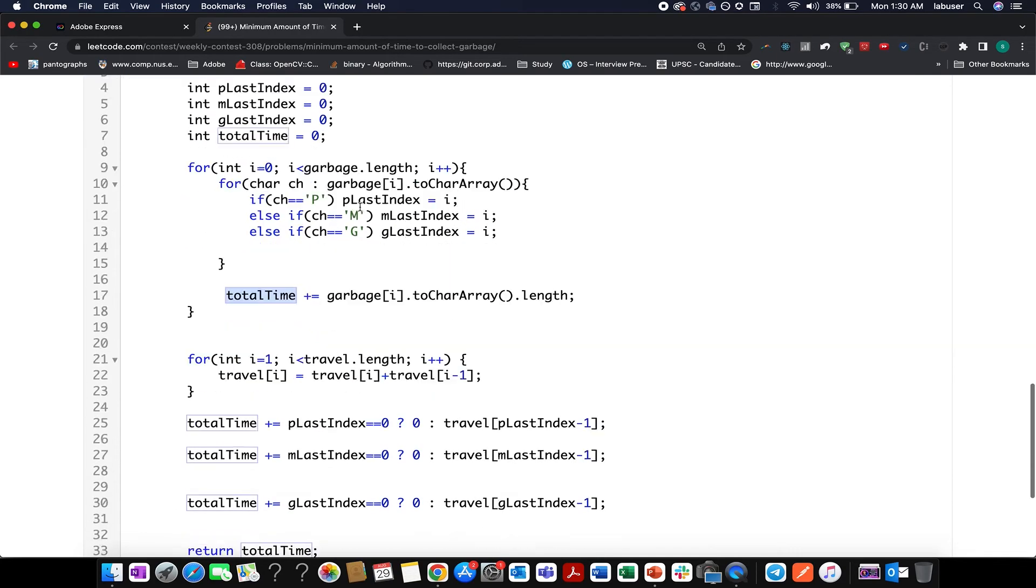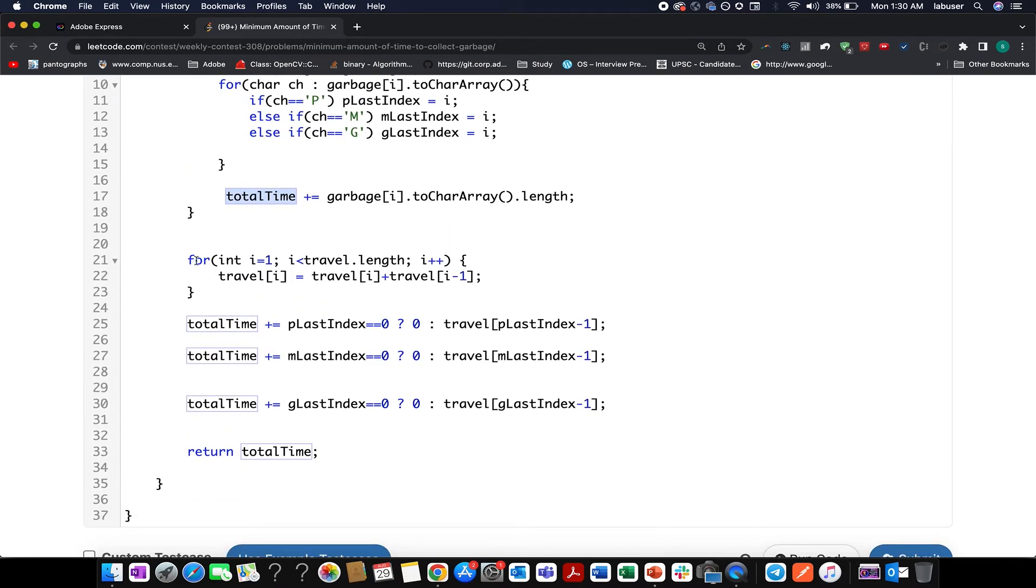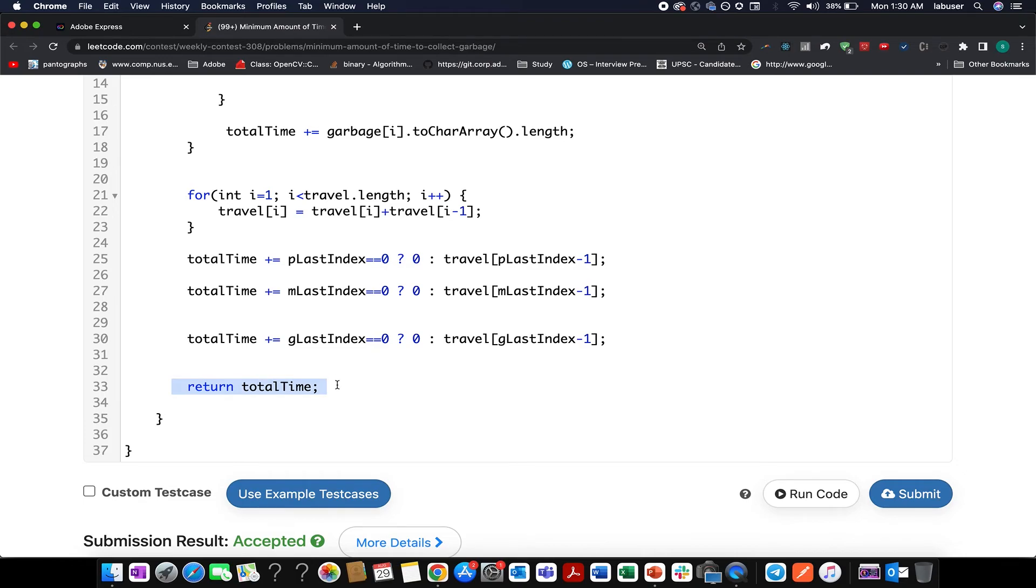Moving ahead at line number 25 till 30, I am basically updating the total travel time. If my p last index happens to be equal to zero, I don't add any value, otherwise I extract the total travel time corresponding to p last index and I add it to total time variable. Similarly, I do it for the m last index as well and g last index as well. At line number 33, I simply return the total time value.